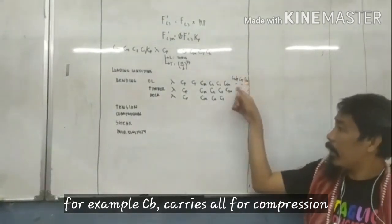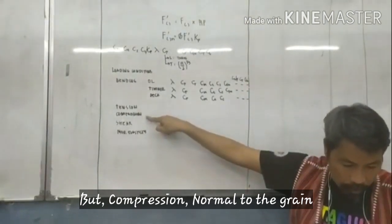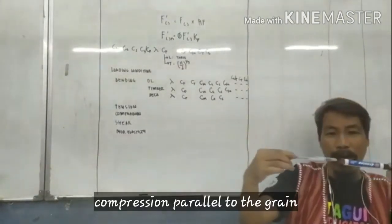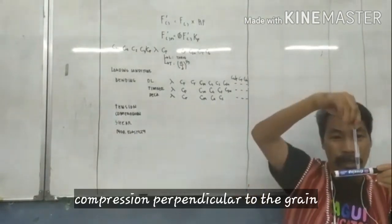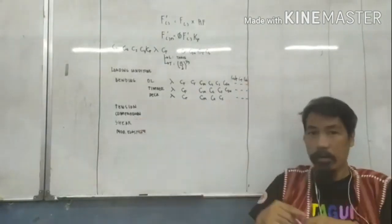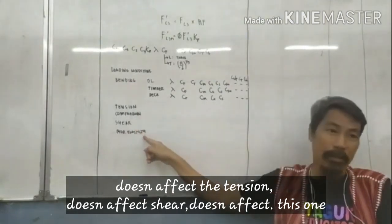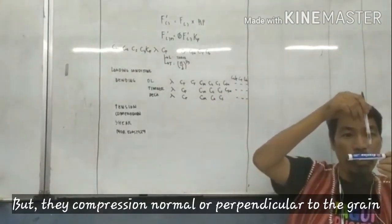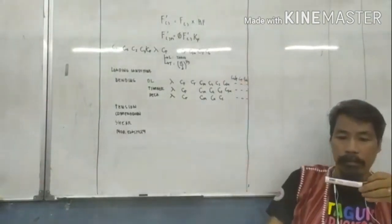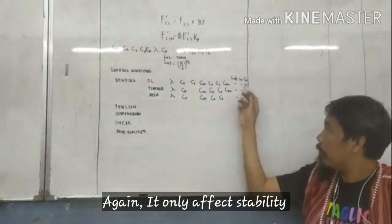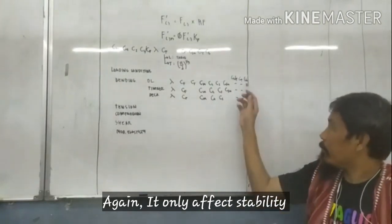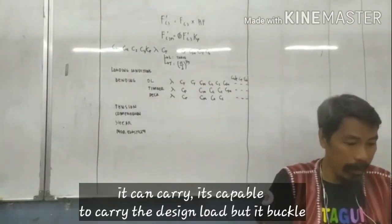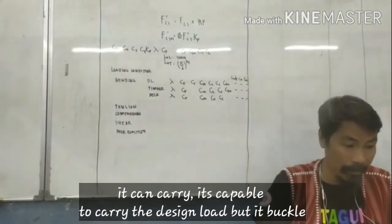So for example, CB here for compression, the compression. How about this one? Again, it only happens with stability. Buckling, buckling is stability. It can, it is capable to carry buckling.